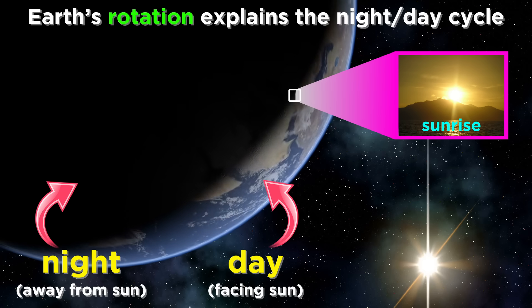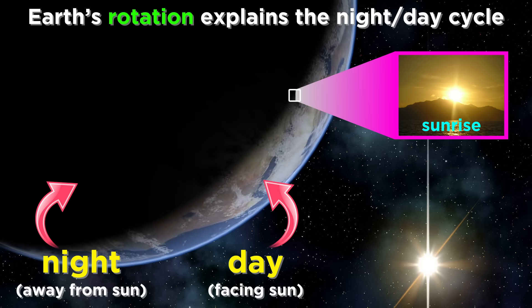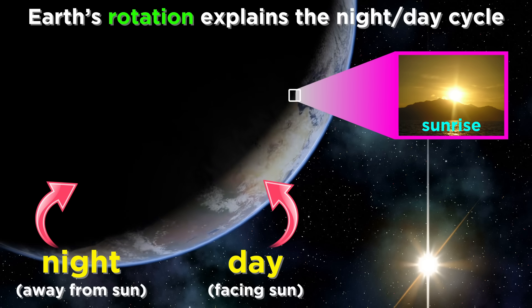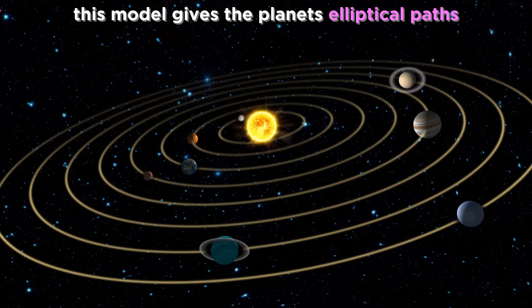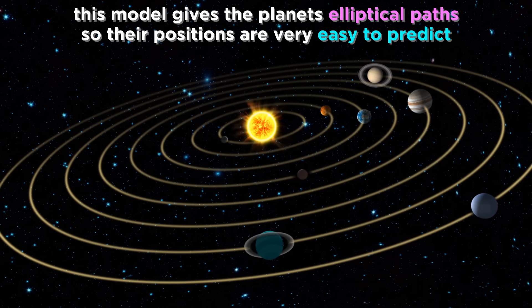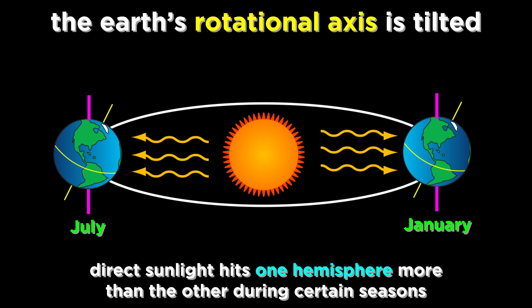As earth rotates, it's daytime when facing the sun, and nighttime when facing away from the sun. The apparent motion of all these celestial objects utilizes elliptical paths, and can therefore be predicted. The seasons occur because of the amount of sunlight hitting one hemisphere versus the other at any given time in earth's orbit.